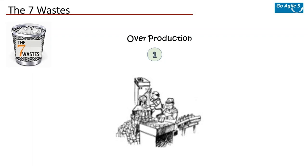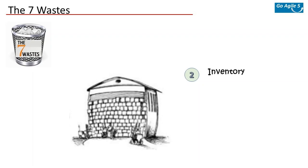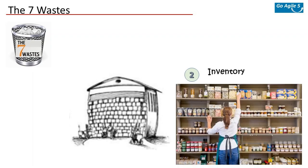On overproduction: demands keep changing, so what's the point in producing more than what they can handle at a given time? Producing more than what is required is a waste. On inventory: carrying surplus raw materials is a waste. His idea is keep only just the right quantities at that given time — produce what is just needed and only when it's needed. This ensured stocks are carried at the minimum while making sure a smooth flow of work is established.